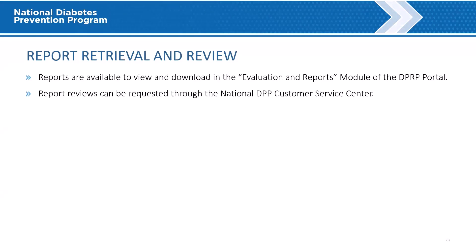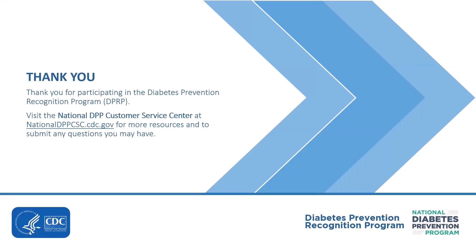Report Retrieval and Review. Once the progress or evaluation report has been compiled and released, the organization will receive an email to let them know that the document is ready for viewing and download. The Evaluation and Reports module of the DPRP portal houses all reports. Requests for a call to review the report with a technical assistance representative can be made through the National DPP Customer Service Center. This concludes this presentation — thank you for participating in the National DPP Diabetes Prevention Recognition Program.